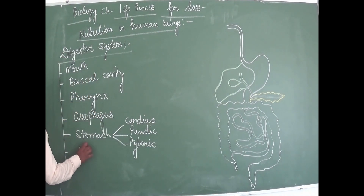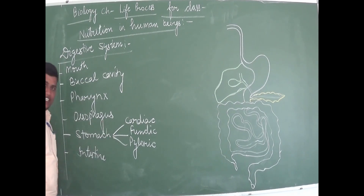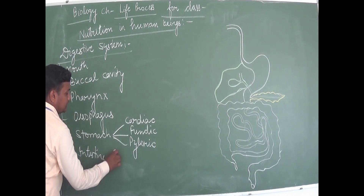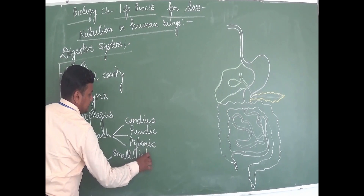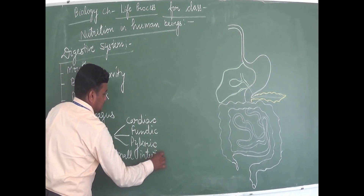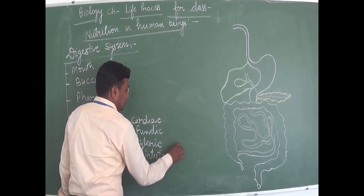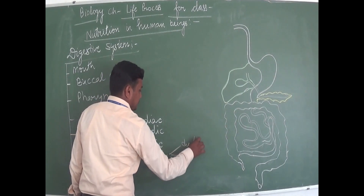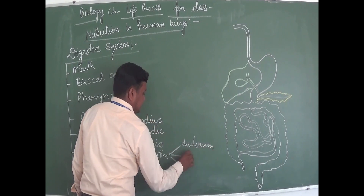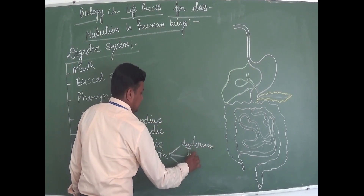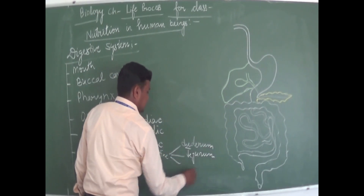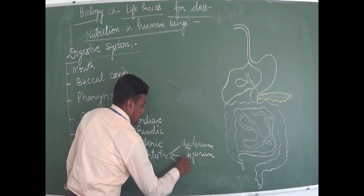Next is the intestine. There are two types: small intestine and large intestine. Small intestine has three parts: duodenum, jejunum, and ileum.